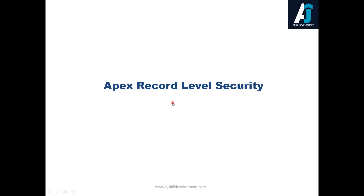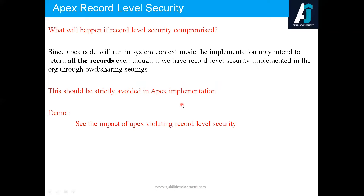In this video we are going to see Apex record level security. What is in the Apex record level security, and what will happen if the record level security is compromised. Since Apex code generally runs in system context mode, if security is not considered in the Apex implementation, the code may intend to return all the records even though the logged-in user doesn't have access.